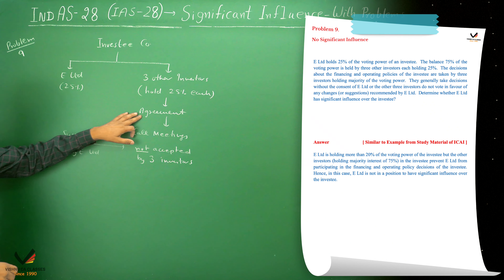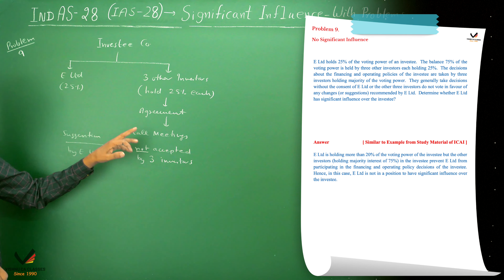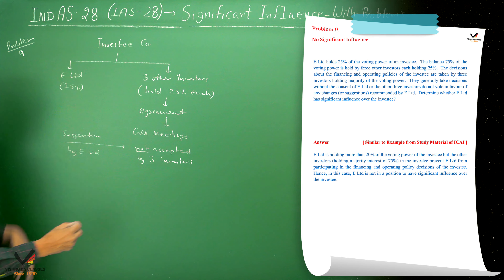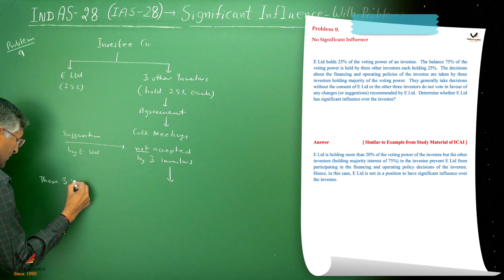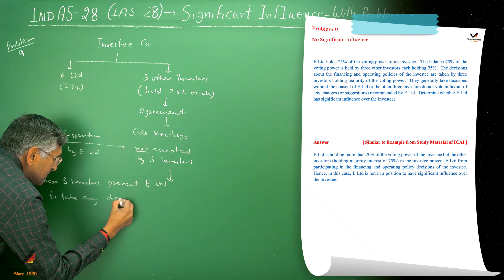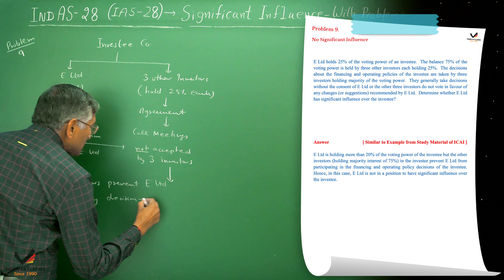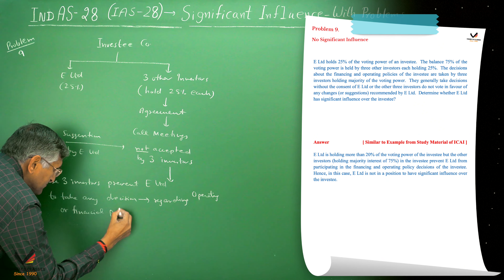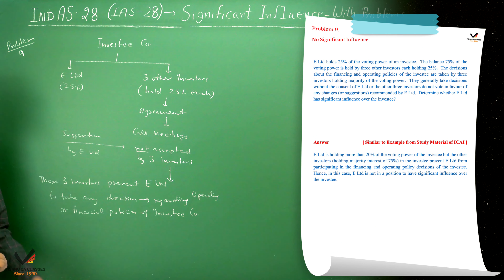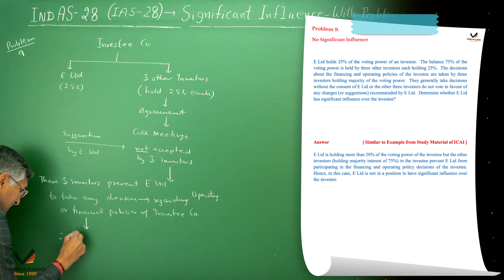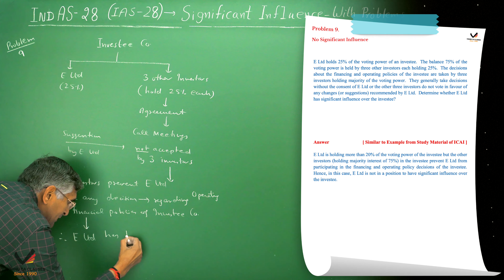Through this contractual agreement or arrangement, these 3 investors prevent Illimitally from taking any decision regarding the operating or financing policy of the investee company. Therefore, we can say that Illimitally does not have significant influence over this investee company. So Illimitally has no significant influence over the investee company.